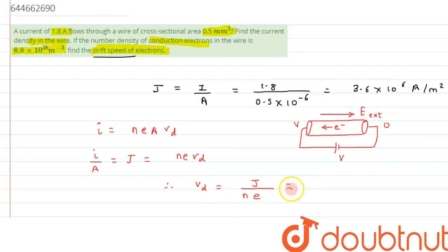We have to substitute the value. We have calculated the current density as 3.6 × 10⁶, divided by n, which is the number density or charge density given as 8.8 × 10²⁸, times e.